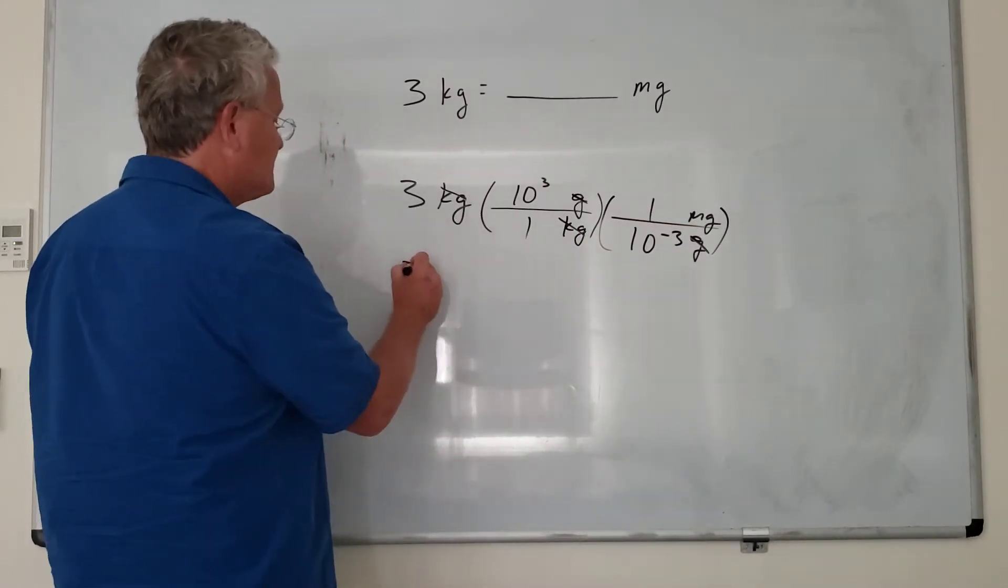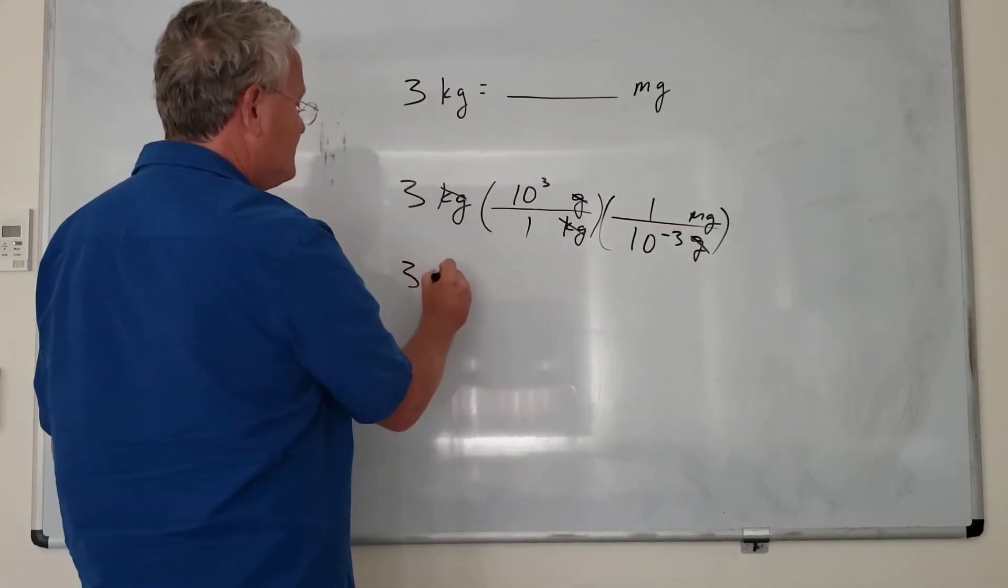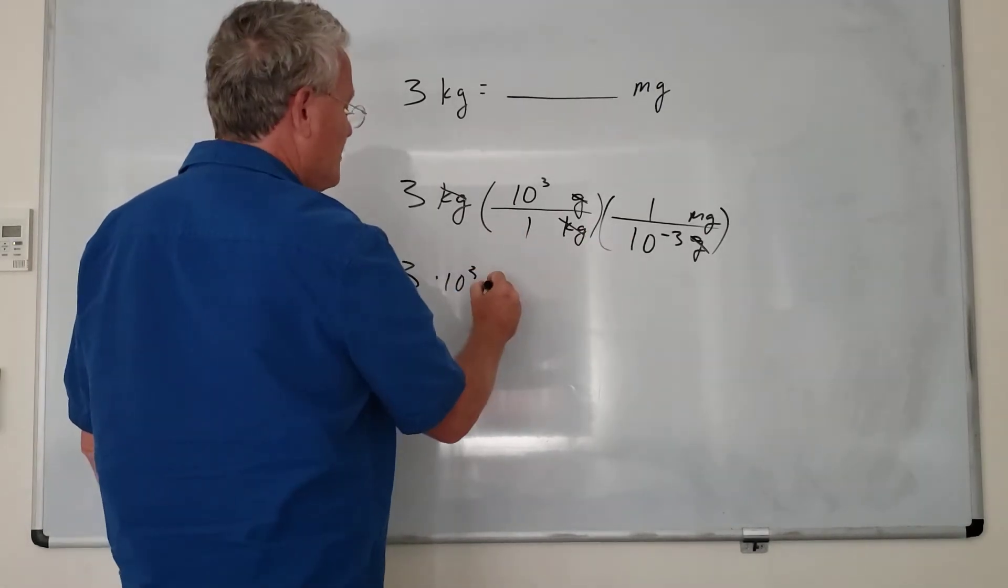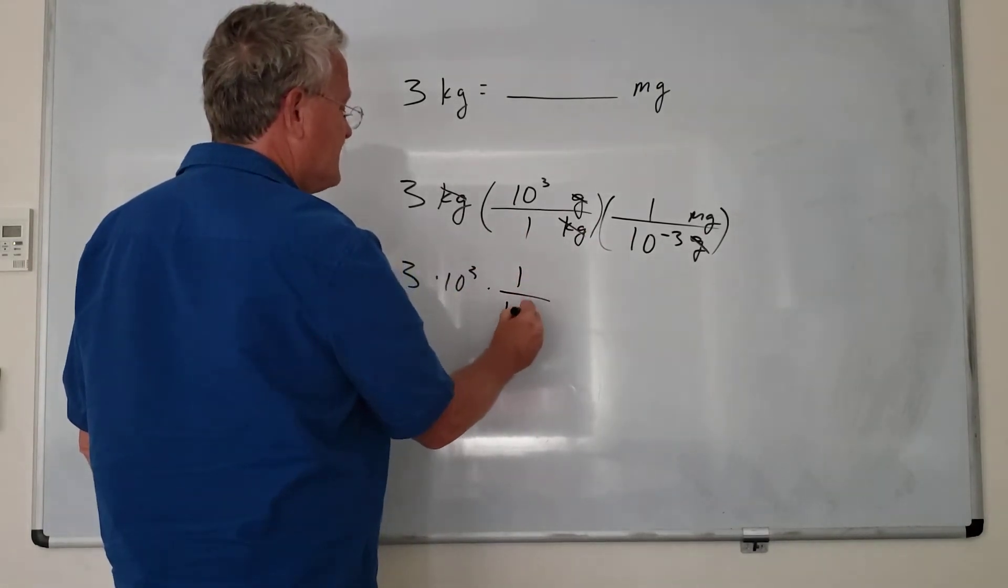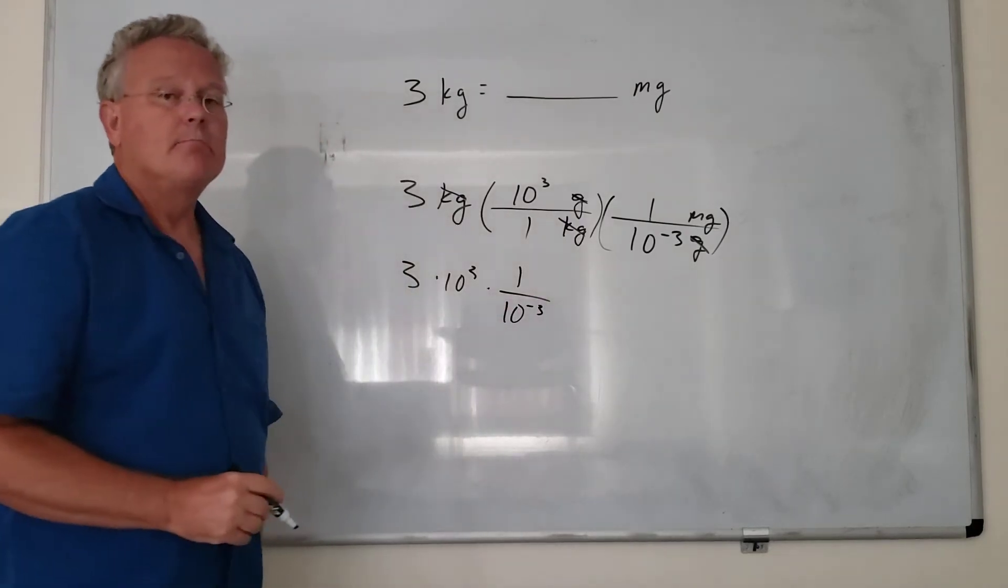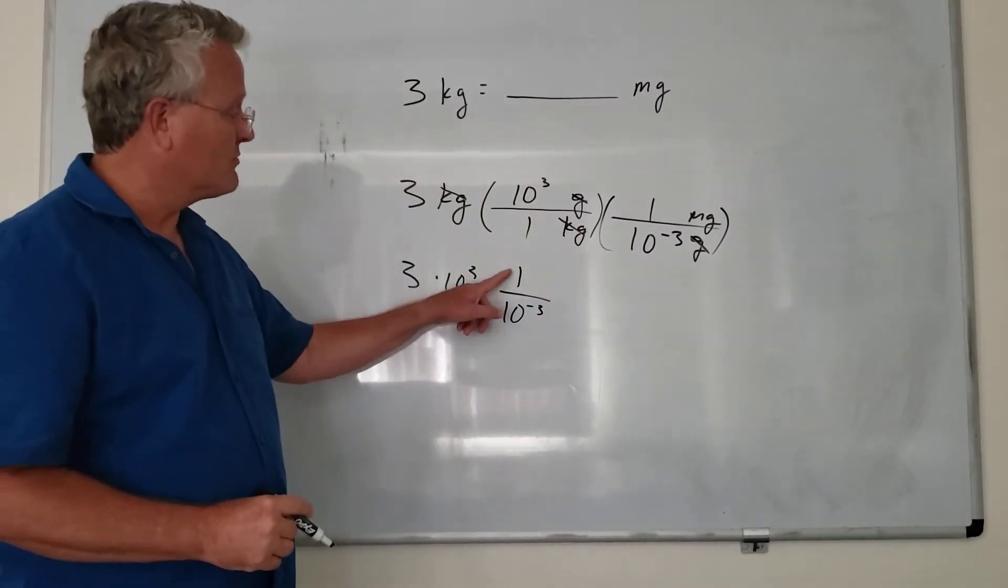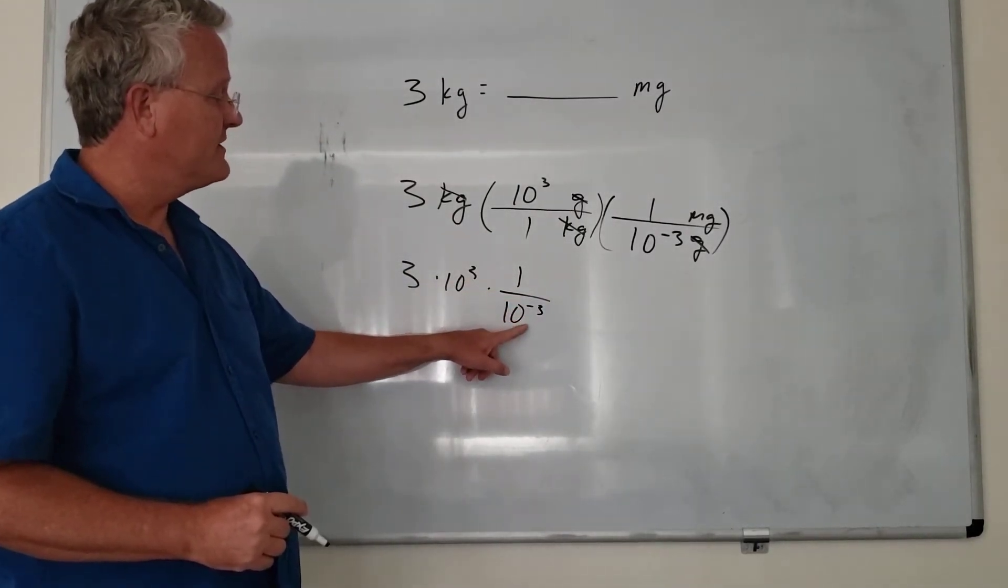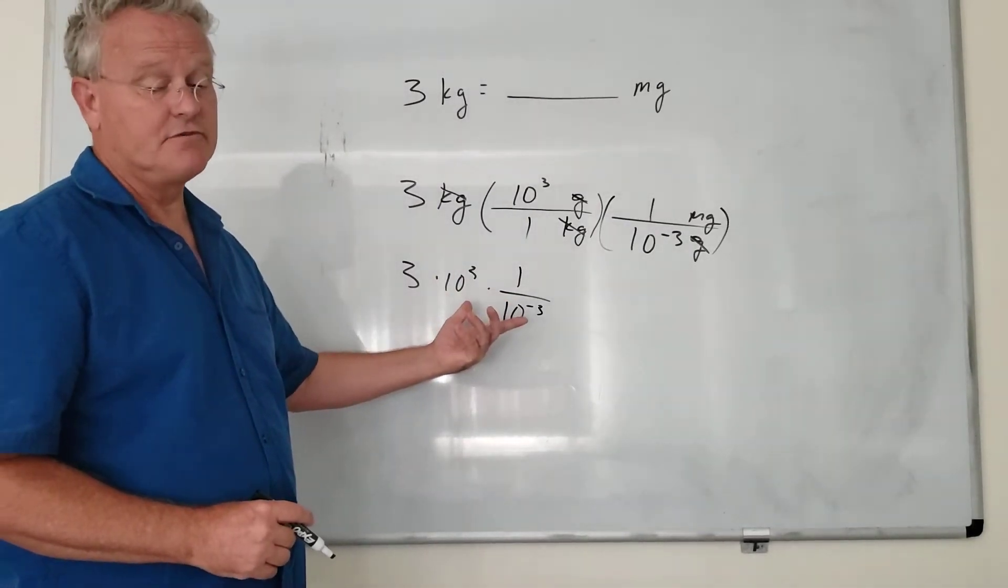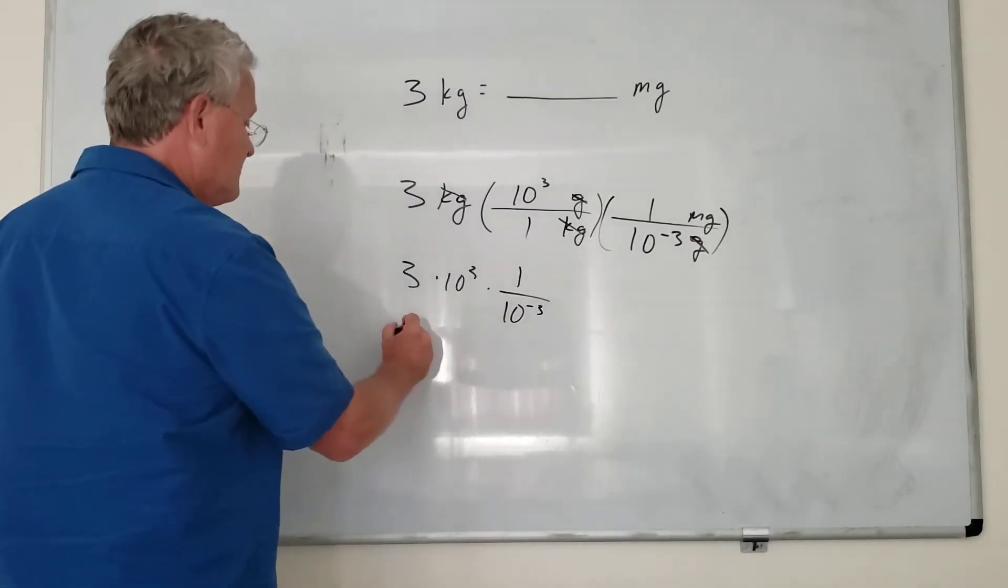So what is this equal to? It's 3 times 10 to the 3 times 1 over 10 to the negative 3. But we know from our exponent rules, 1 over 10 to the negative 3 is 10 to the positive 3, so this is equal to...